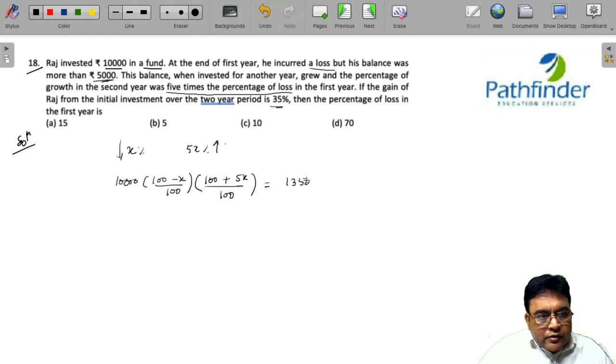And this should be equal to 13,500. So this cancels out and you have 100 minus x into 100 plus 5x is equal to 13,500.